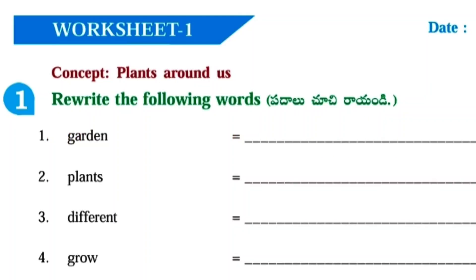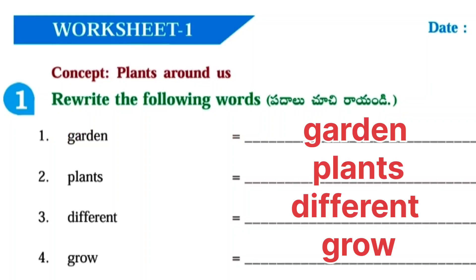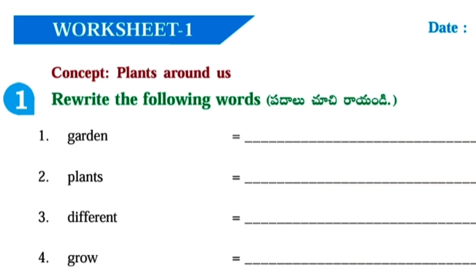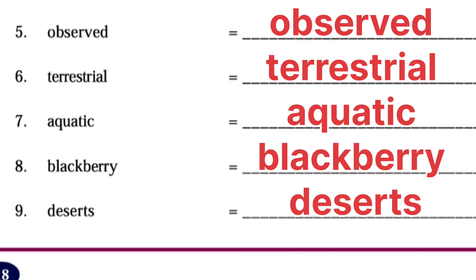Worksheet No. 1, Concept: Plants Around Us. First one, rewrite the following words: Garden, Plants, Different, Grow, Observed, Terrestrial, Aquatic, Blackberry, Digits.